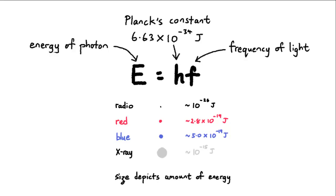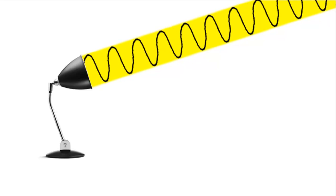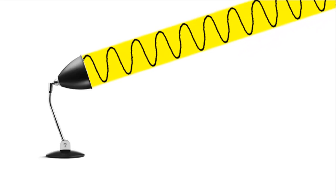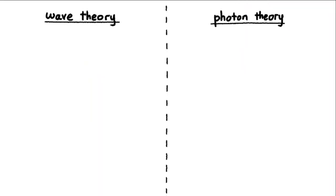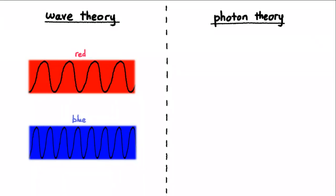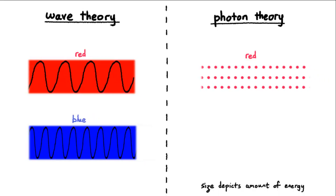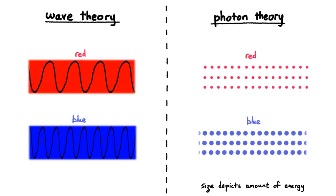The photon theory directly contradicts the wave theory of light, which says that light is an electromagnetic wave. According to wave theory, light energy arrives continuously regardless of frequency of light. According to the photon theory, light energy arrives in discrete lumps, and the frequency of light determines how lumpy they are.